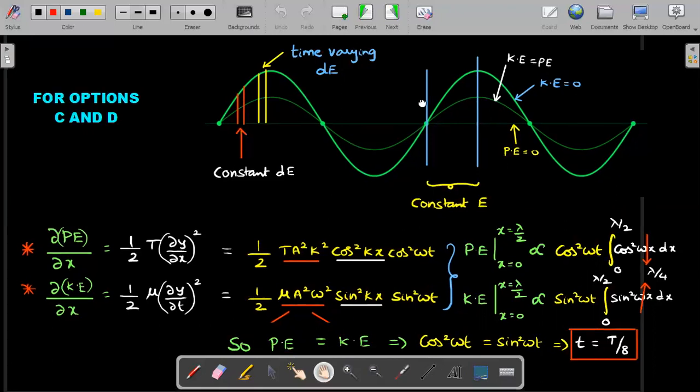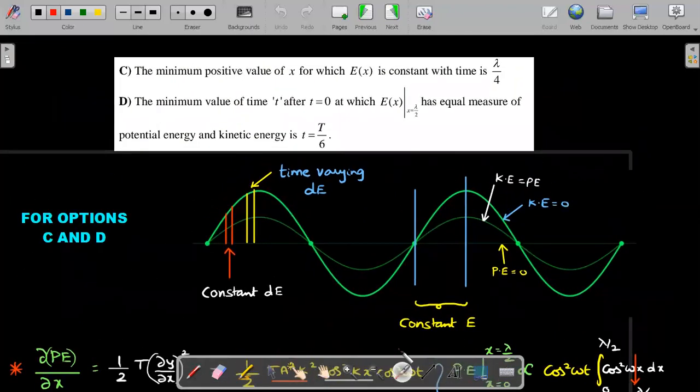Let's see options C and D. Option C: the minimum positive value of x for which cumulative energy is constant with time. You already know from x equals zero to lambda by four, energy may change forms but total energy is fixed. The minimum value of that window is lambda by four.